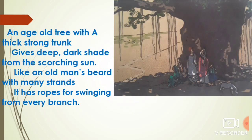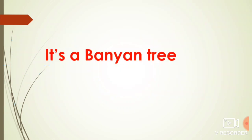I have one riddle for you to solve. Let us read together. An age-old tree with a thick strong trunk gives deep dark shade from the scorching sun, like an old man's beard with many strands. It has ropes for swinging from every branch. Have you guessed it? Yes, it's right — it's a banyan tree.